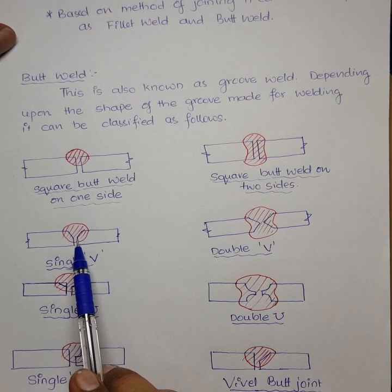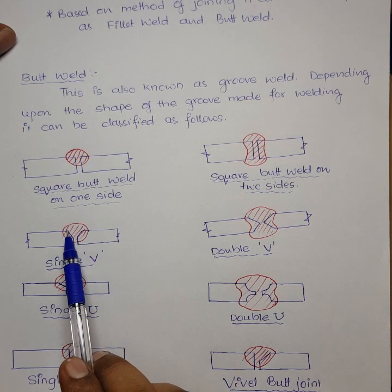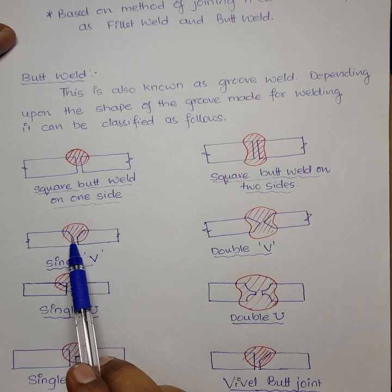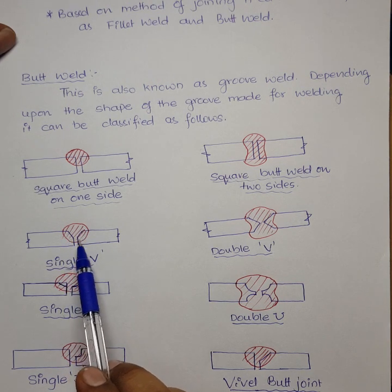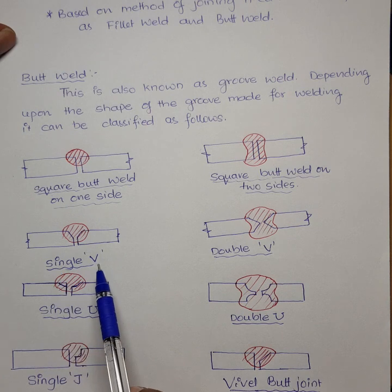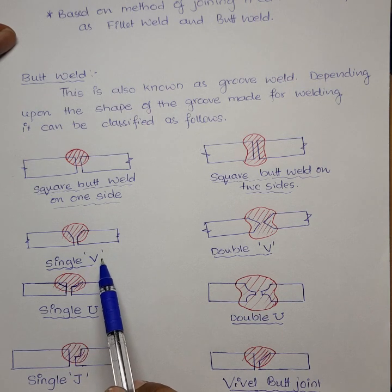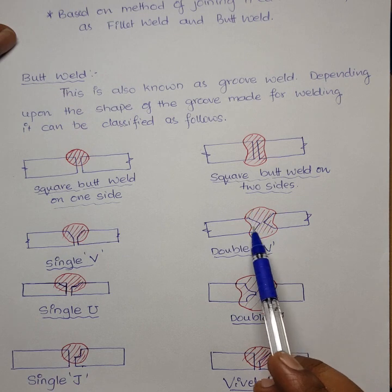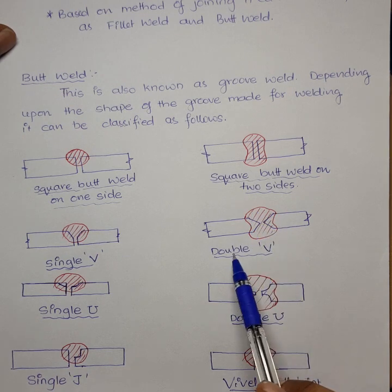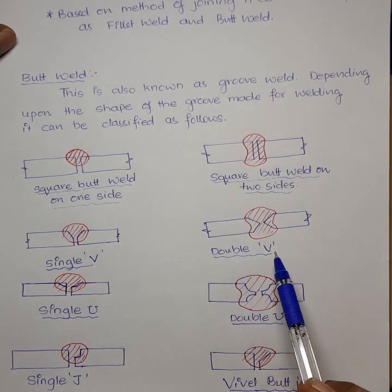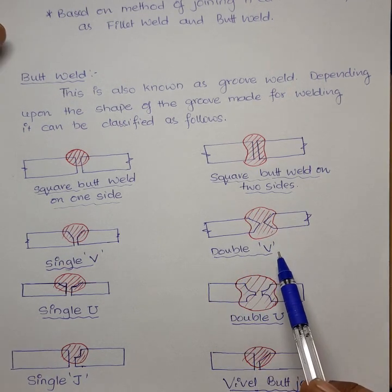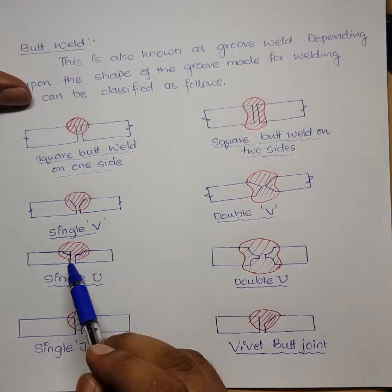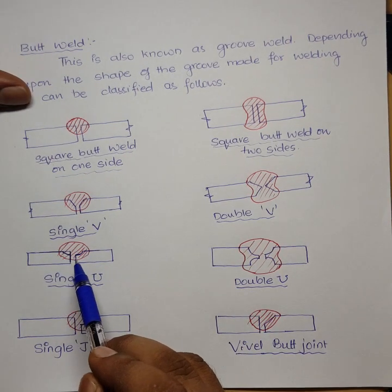Next is the single V type — on one side of each plate a small cut is made to form a V shape, hence it is called a single V butt weld. If the cut is made on both sides and welded together, it is called a double V butt joint.